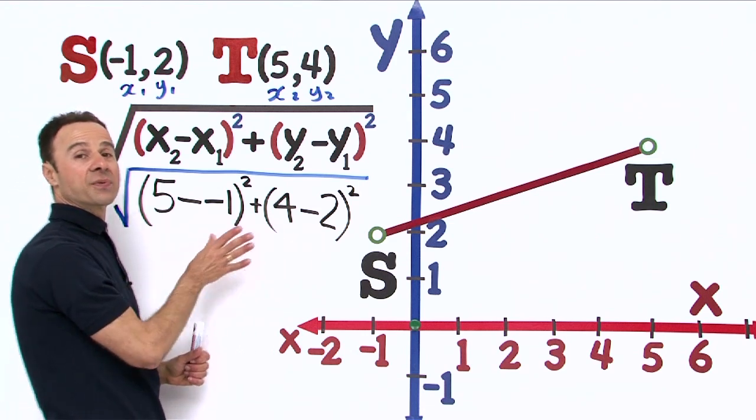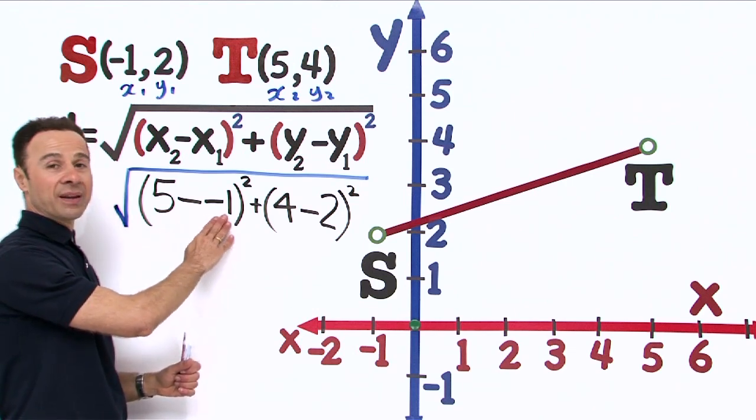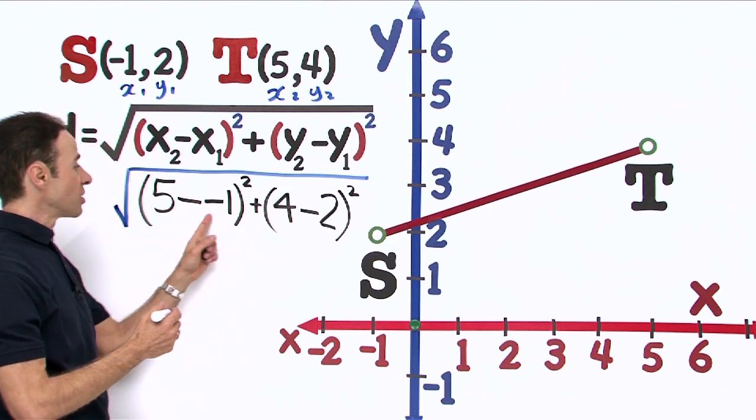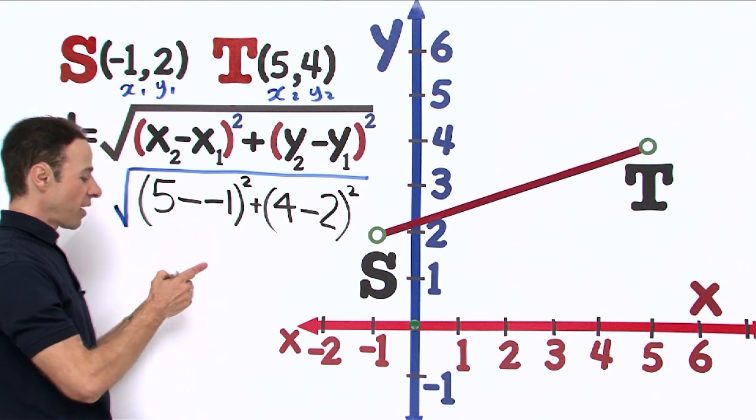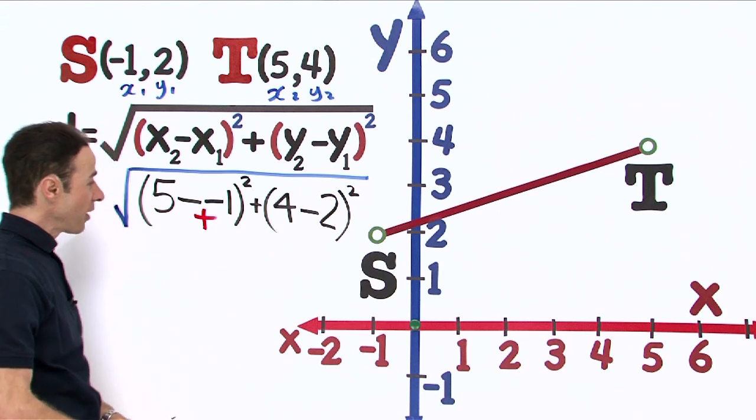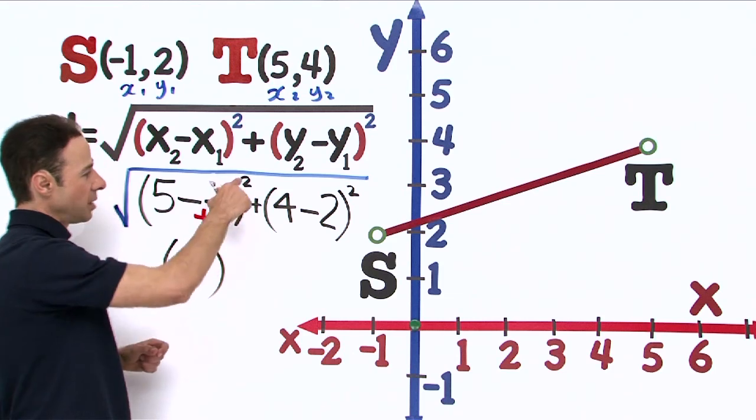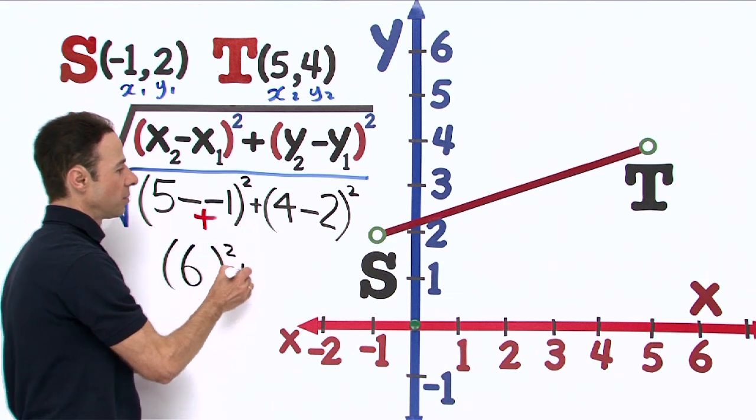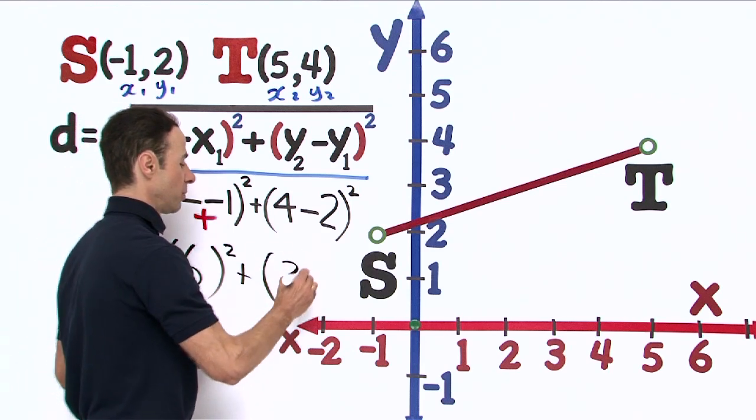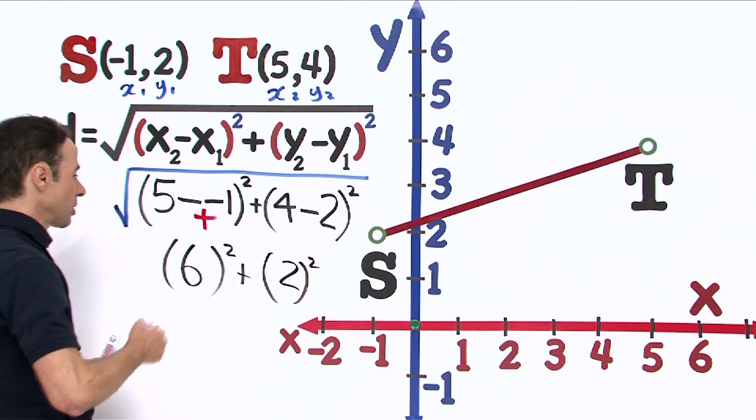There is our formula for step number 2. Let us work out what is inside the brackets first. On the left we have 5 minus minus 1, so minus with a negative together—minus minus turns into a plus. It becomes 5 plus 1, that is a 6. Bring down the 2, plus 4 minus 2, that is easy, that is only 2. Put the square there, and the big square root sign on top of that.